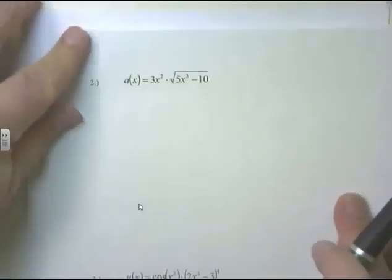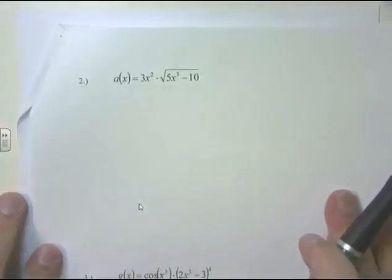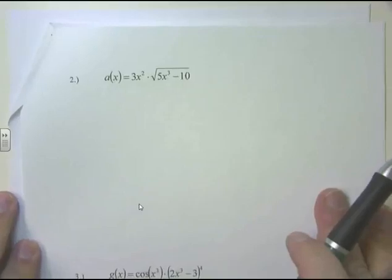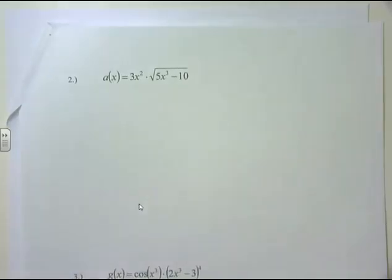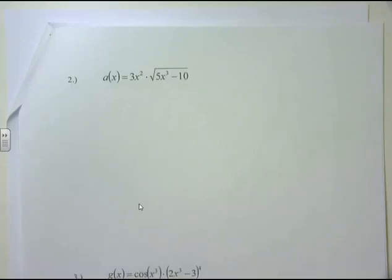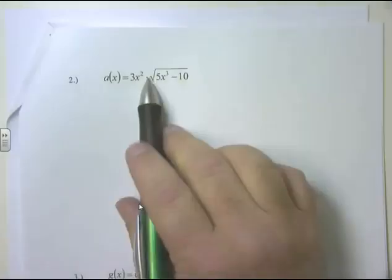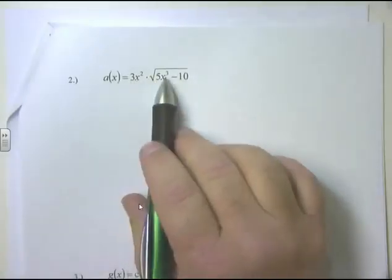Next example: a(x) = 3x² times the square root of (5x³ - 10). Pause and ask yourself what you see. Reading it: 3x² times the square root of 5x³ - 10. With that multiplication in the middle, this is a big product rule problem.